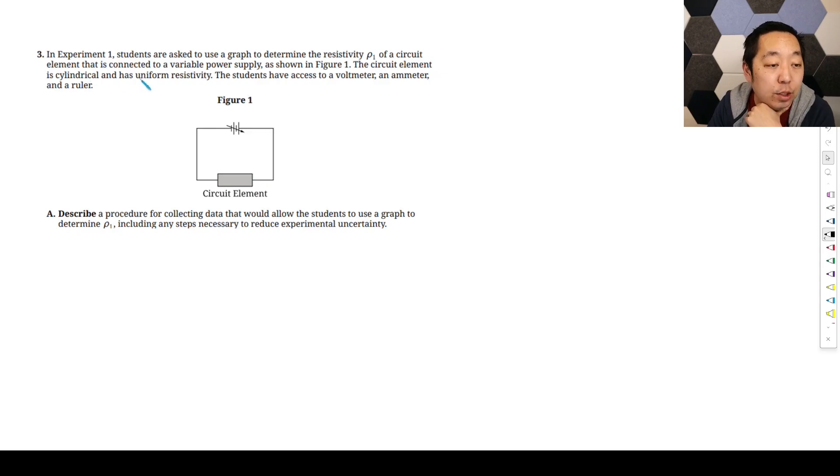The circuit element is cylindrical and has uniform resistivity. The students have access to a voltmeter, an ammeter, and a ruler.